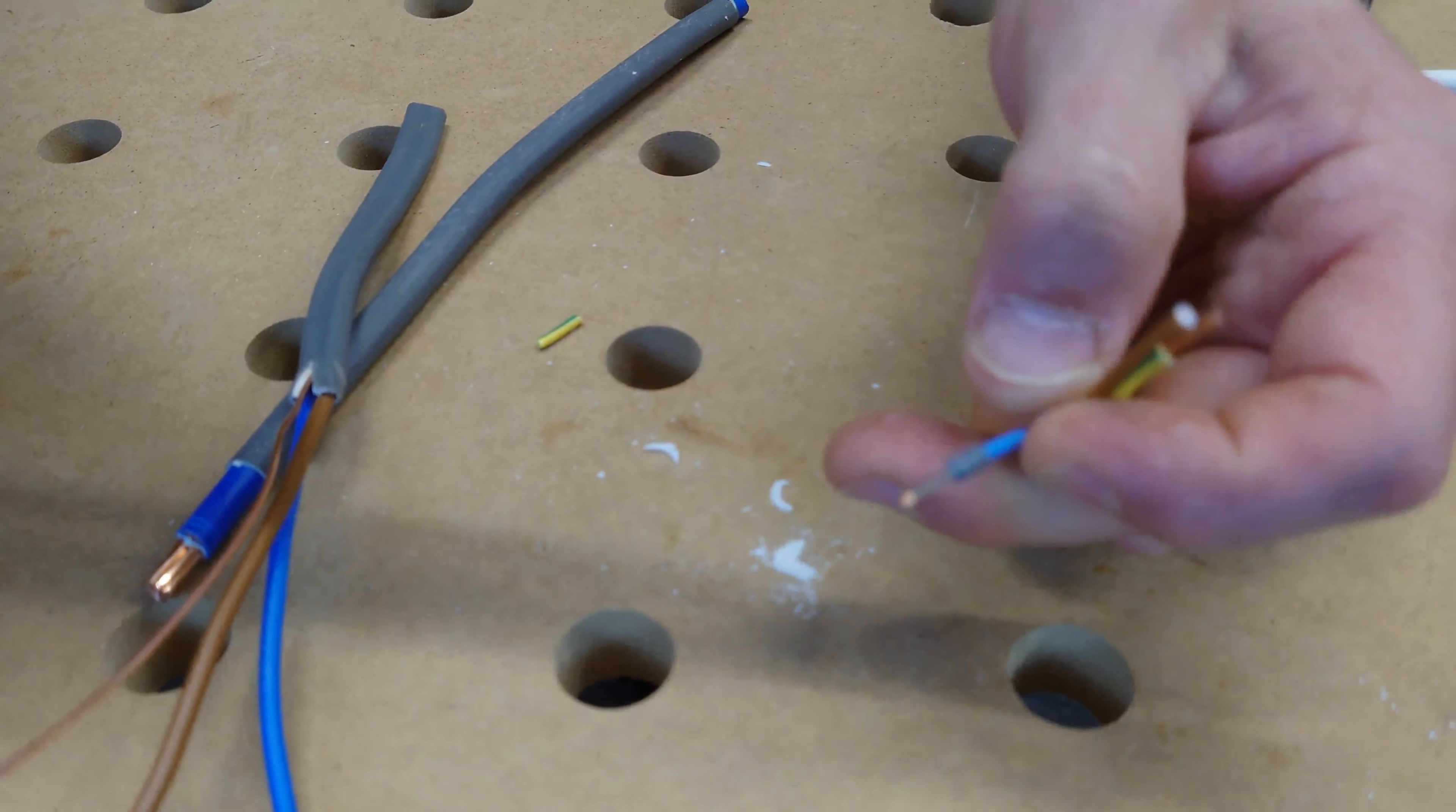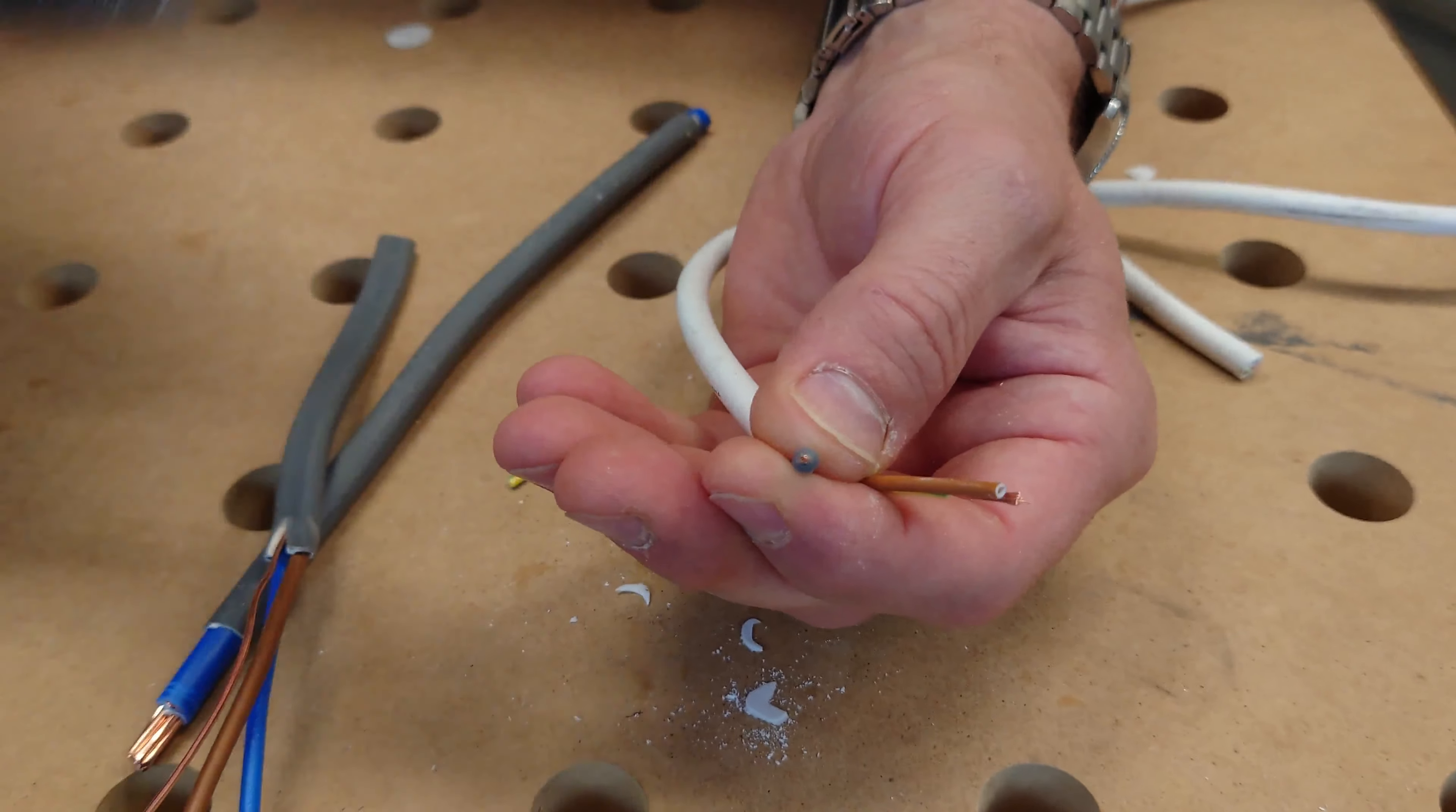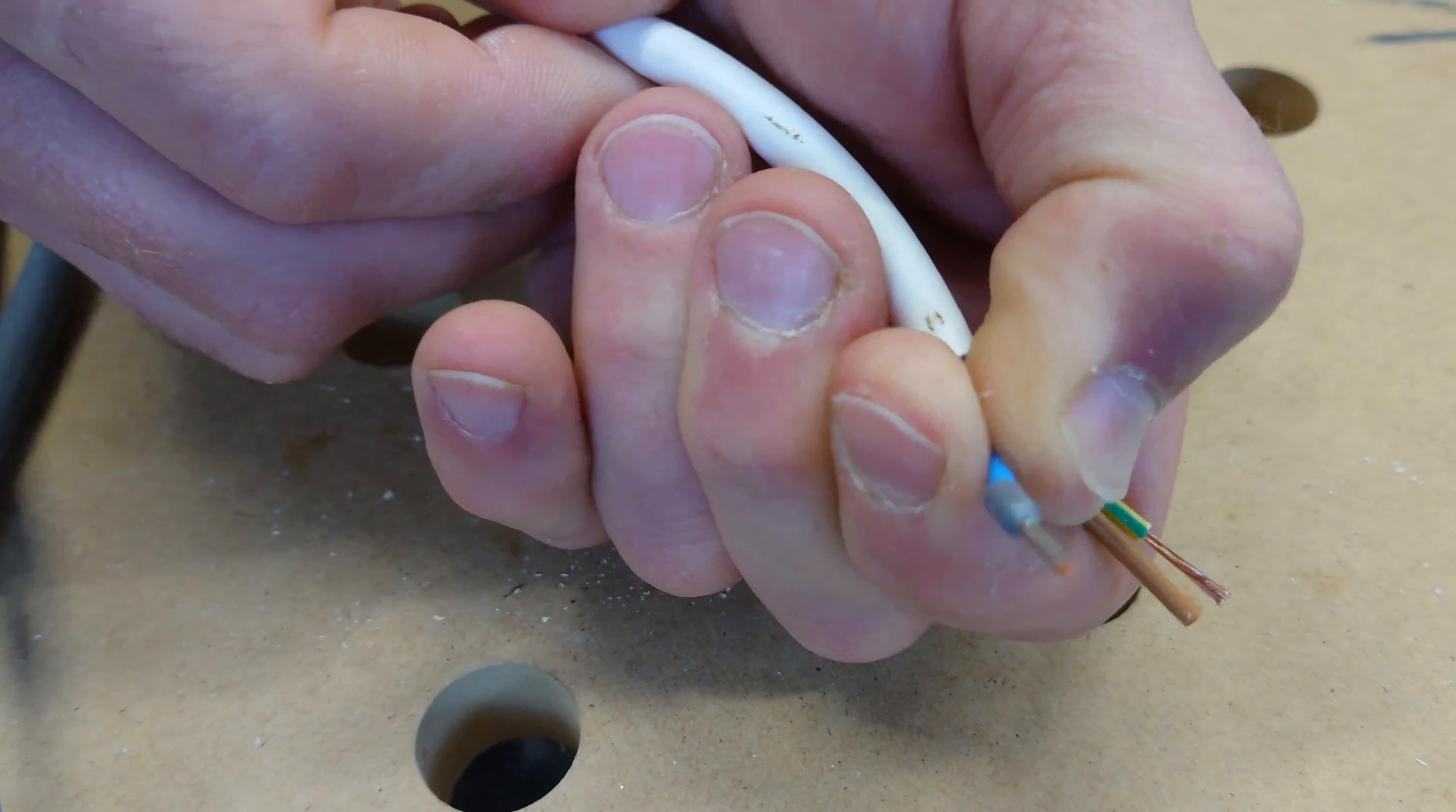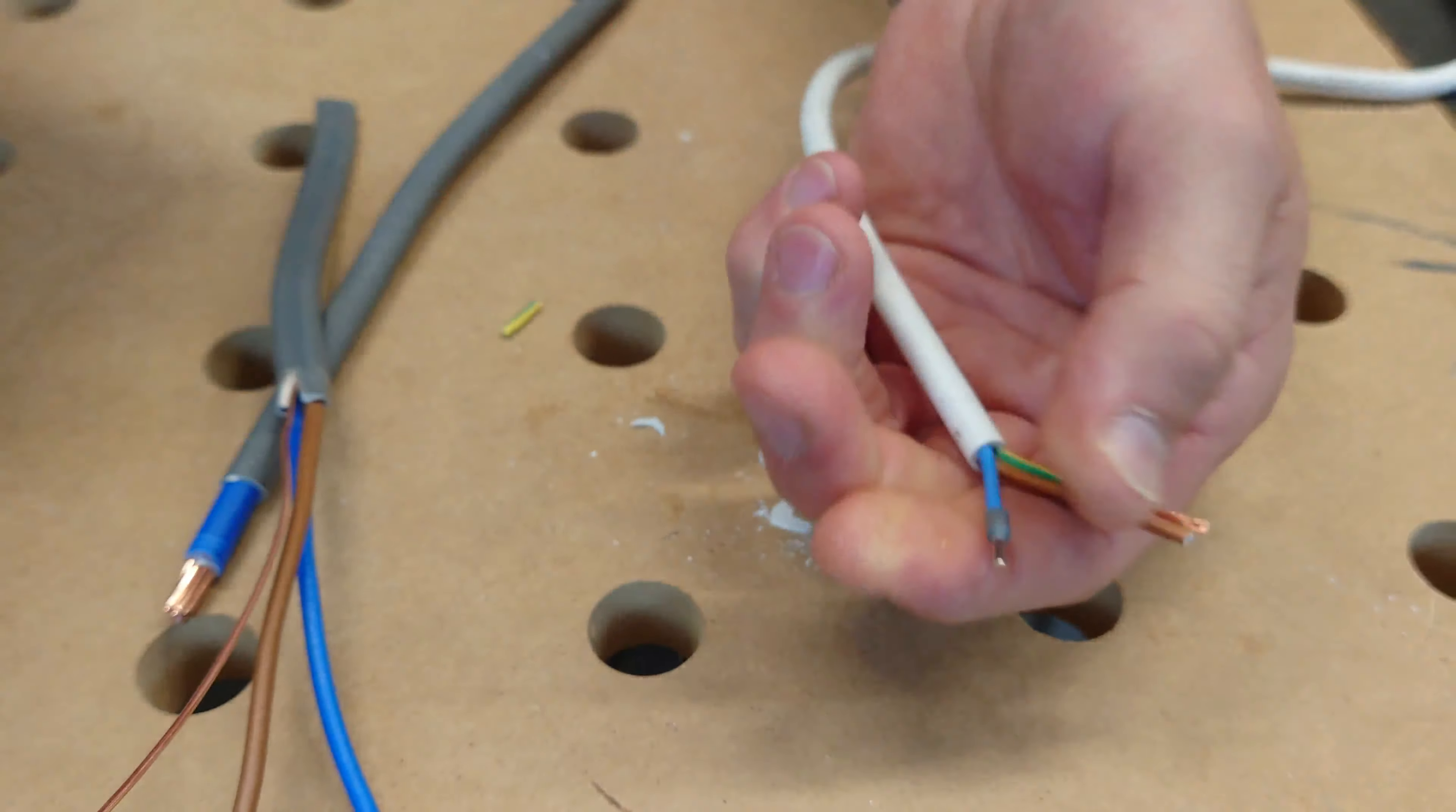Those crimping tools are rated from 0.5 to 2.5 millimeter cable. You literally just line it up, push it in, give it a squeeze. One perfectly crimped cable. And if you've got a little bit overhanging on the top there, just snip it off.